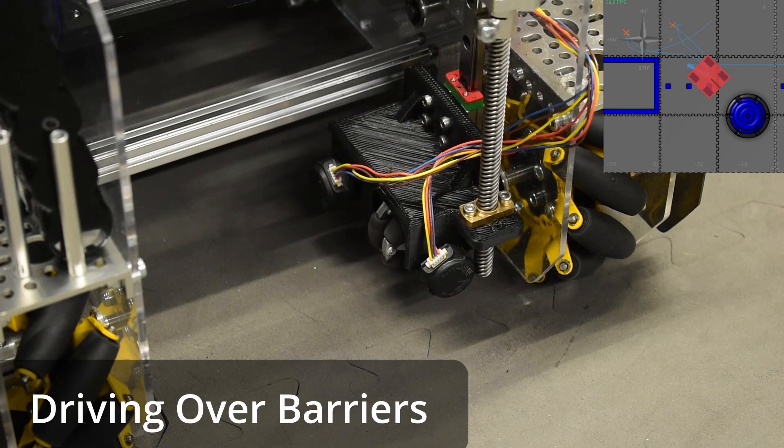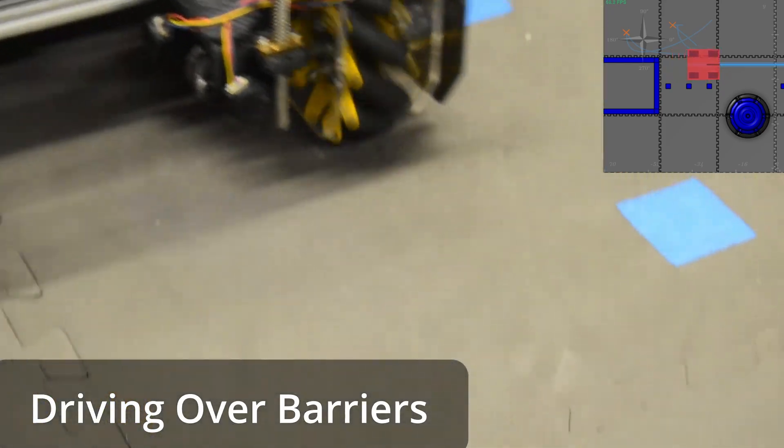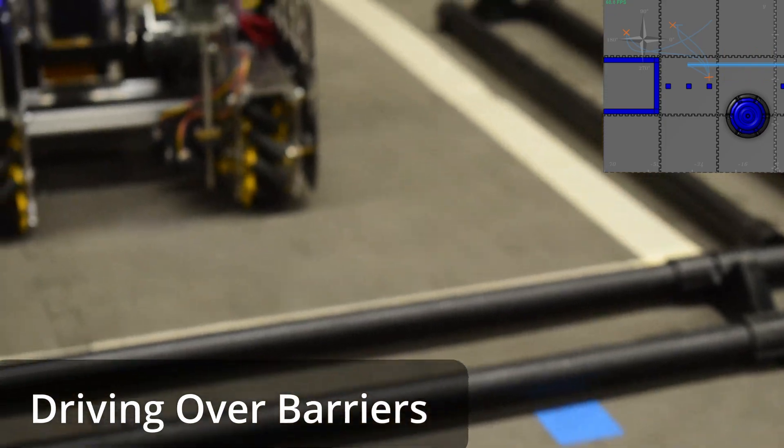Our robot is capable of driving over the barriers, which allows us to move out of the way of other incoming robots trying to park at the end of autonomous.